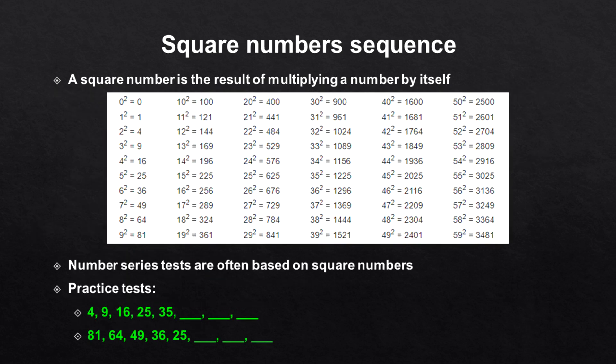Number series tasks are very often based on square numbers. A square number is a result of multiplying a number by itself. For example, 16 is a square number because multiplying 4 by itself gives 16. Here you can see an overview with square numbers. Number series tests are very often based on square numbers, like these practice tests.